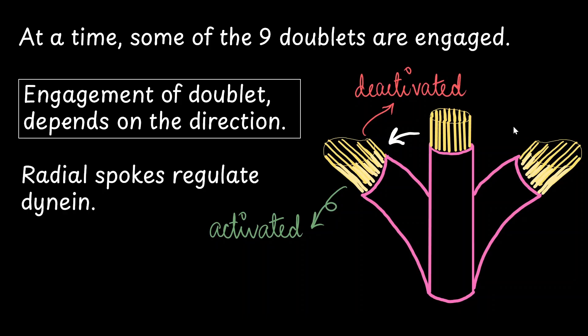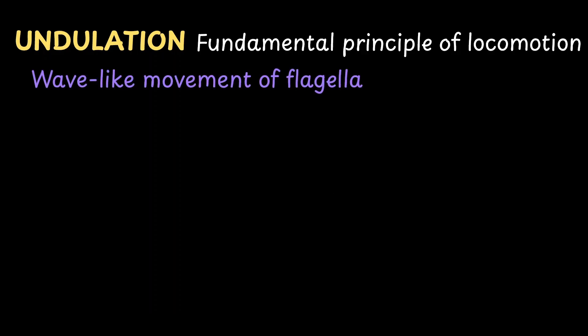Radial spokes regulate the dynein. They cause the dyneins at the activated end to slide forcefully whereas the deactivated side does not slide. So the regulation of the radial spoke along with the nexin is what causes the bending. And bending leads to undulation. Undulation is the fundamental principle that is behind the locomotion in organisms that have flagella and cilia. It is said to be a wave-like movement that is seen in these appendages. And when we say wave-like, the direction of the wave is very important.